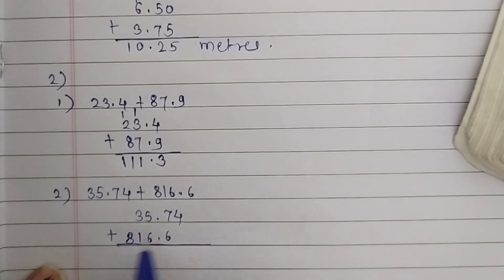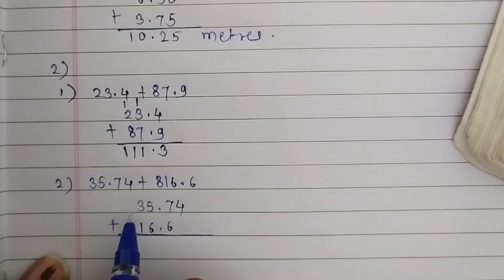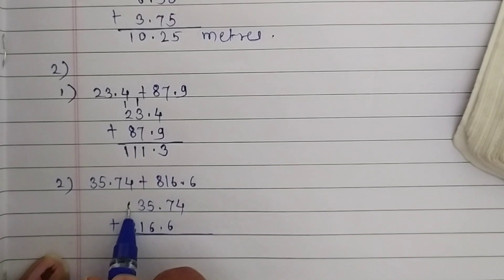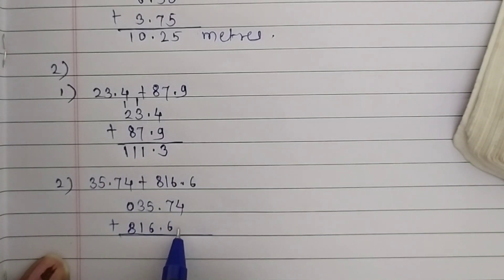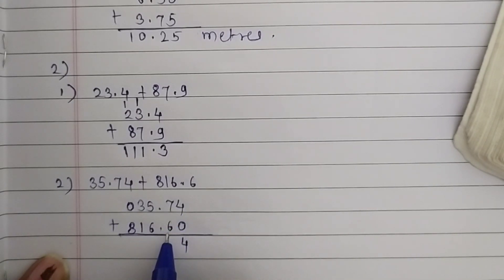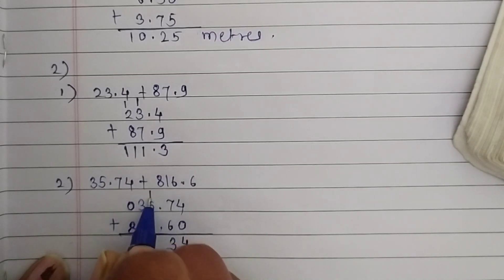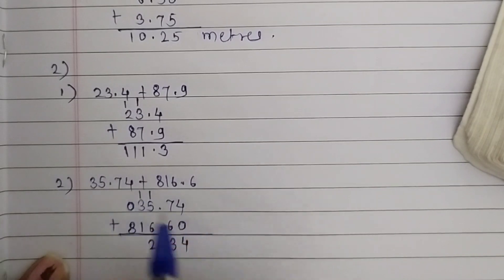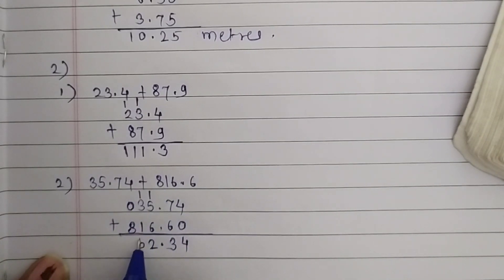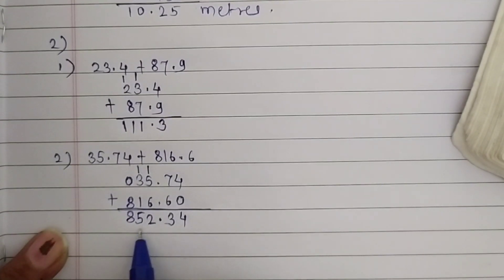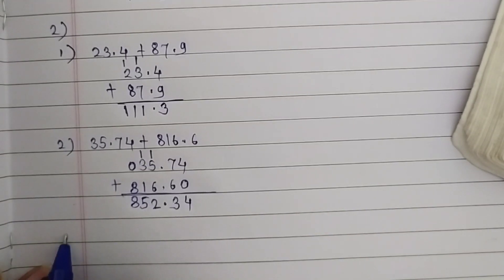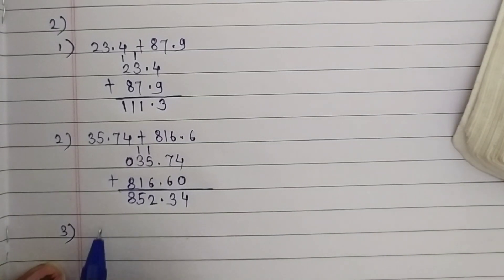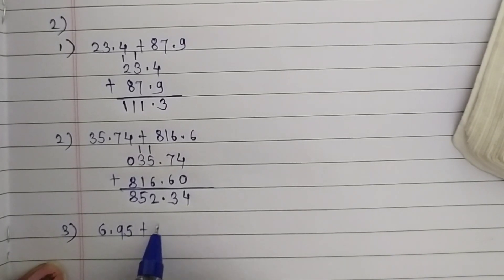For convenience, we write zeros for blank decimal places — place a 0 in the blank hundredths position. Now add: 4 plus 0 is 4, 7 plus 6 is 13, carry 1 — place the decimal point. 6 plus 5 is 11 plus 1 is 12, carry 1. 3 plus 1 is 4 plus 1 is 5. Then 8. The answer is 852.34.